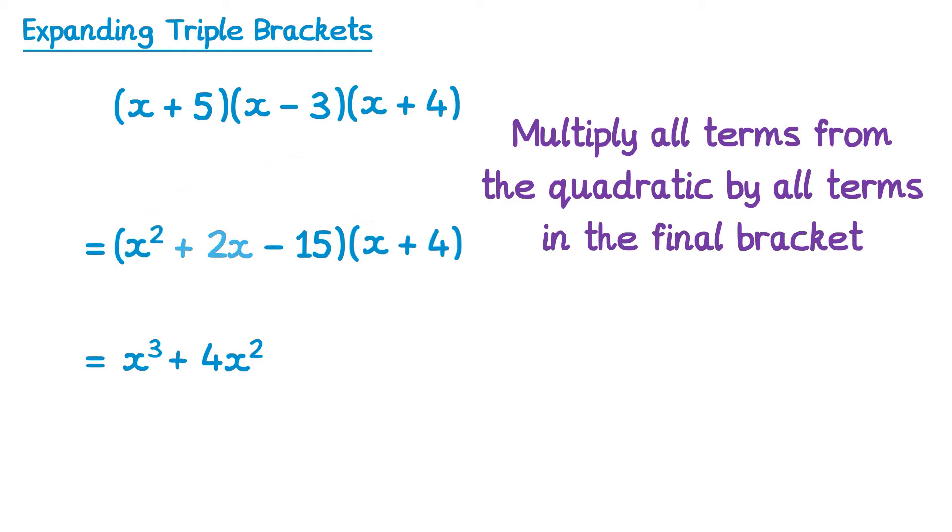We've now multiplied the x squared by both terms in the final bracket, so we'll move along to the plus 2x. So plus 2x times x is plus 2x squared, and plus 2x times 4 is plus 8x. So we've now multiplied the plus 2x. So we'll move on to the negative 15. So negative 15 times x is negative 15x, and negative 15 times 4 is negative 60. So we've now multiplied all terms from the quadratic by all terms in the final bracket.